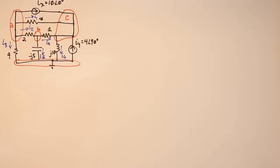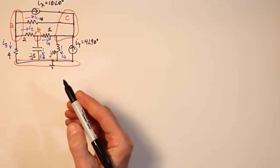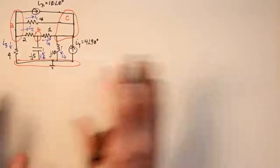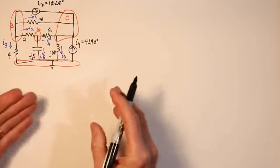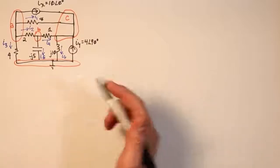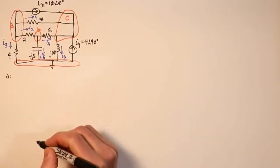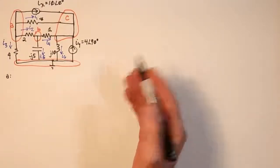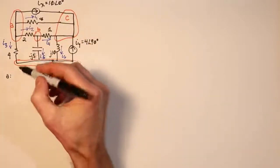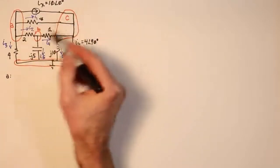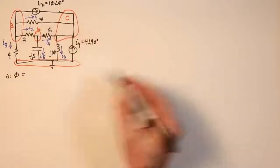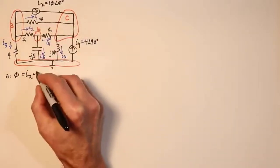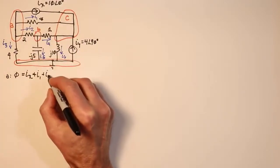Now we're going to do some KCL summation. First we look at node A, and we're going to use the standard that in has to equal out. What's coming in over here? Nothing — Ix is out, I1 is out, I2 is out, I3 is out. So we've got zero in, and that has to equal Ix plus I1 plus I2 plus I3.